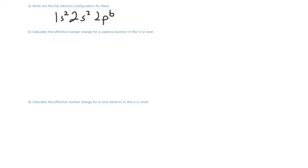And if you add up all of these superscripts — two plus two plus six — you see that neon has a total of 10 electrons, which makes sense because neon has an atomic number of 10.